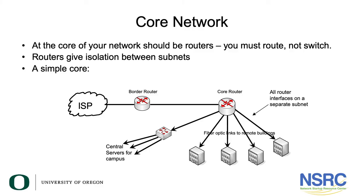Here's a diagram of what we typically want at your core network. You're going to have a core router — which might be a layer 3 switch configured as a router — and you'll route at this layer, since routers give isolation between subnets. From that core router location, you run fiber optic cable to every remote building. This is a very typical design that we will use throughout the rest of this course.